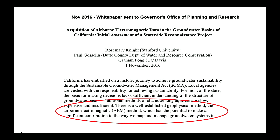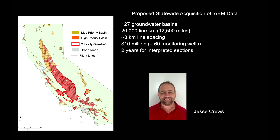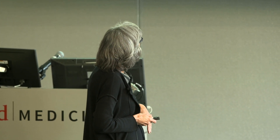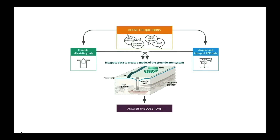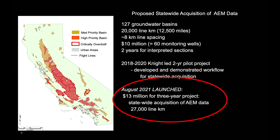In November 2016, I partnered with a groundwater manager and a professor at UC Davis. We sent a white paper to the governor's office saying: you are never going to get sustainable groundwater management unless you really improve the data you have and the way you're acquiring data. You need to use airborne EM. We came up with a plan, drew the lines on the map, said it's going to cost $10 million and two years — you'll collect 20,000 line kilometers. I led a two-year pilot study outlining the steps needed. This was launched in August 2021: $13 million for a three-year project to acquire 27,000 kilometers of airborne EM data.